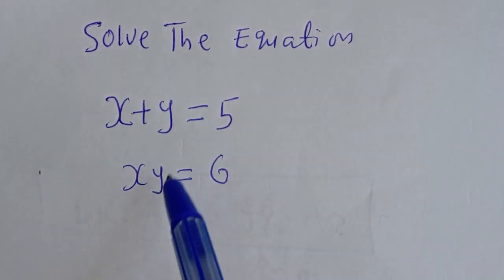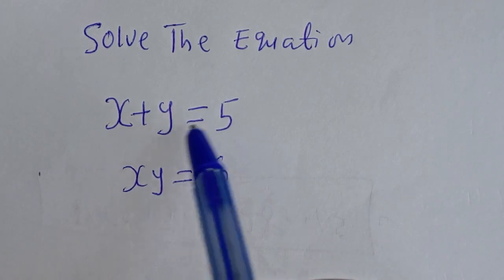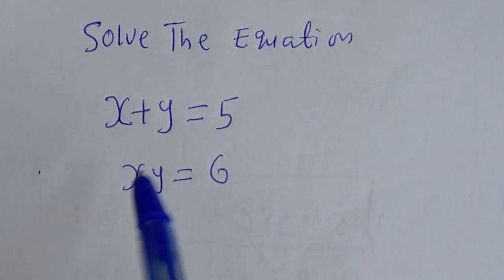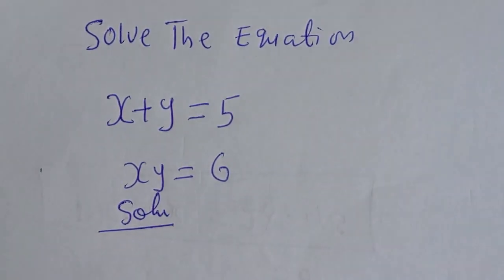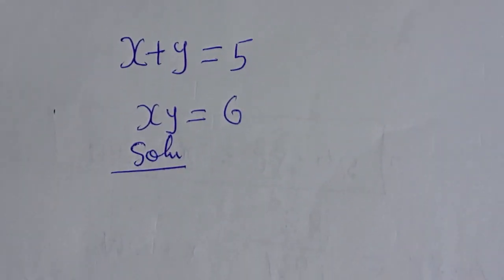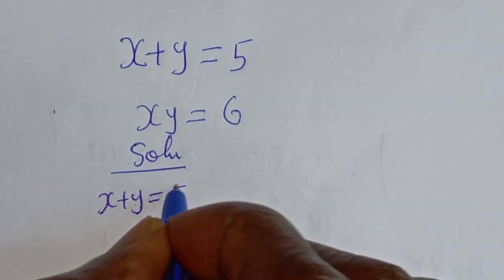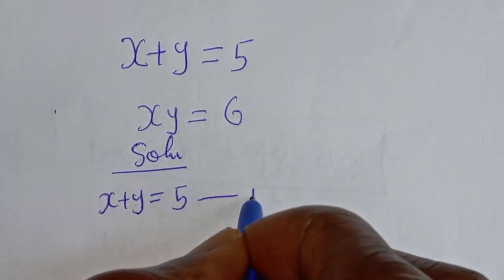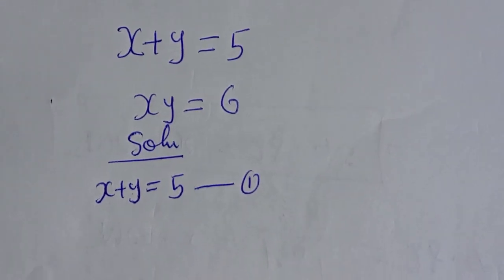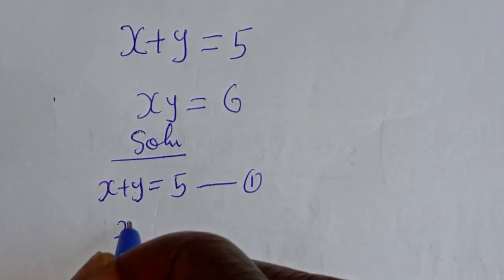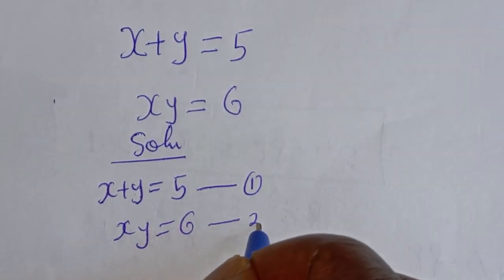Hello, we want to solve for S and Y from this equation: S plus Y is equal to 5, and S times Y is equal to 6. We have X plus Y is equal to 5 — let's call this equation 1 — and X times Y is equal to 6 — let's call this equation 2.